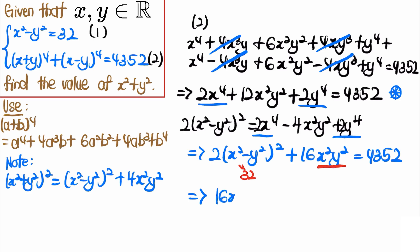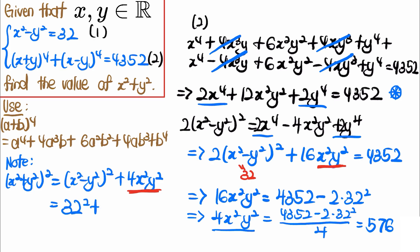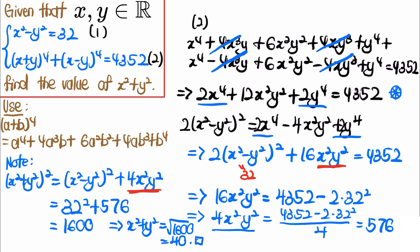From the equation, 16x²y² equals 4352 minus 2 times 32 squared. Dividing by 4 gives 4x²y² equals 576. Replacing into (x²+y²)² = 32² + 576 gives 1024 plus 576 equals 1600. Therefore x²+y² equals the square root of 1600, and since x and y are real numbers we take the positive value, which is 40.